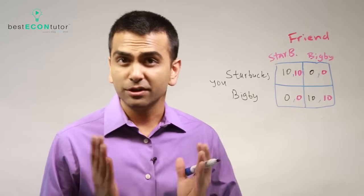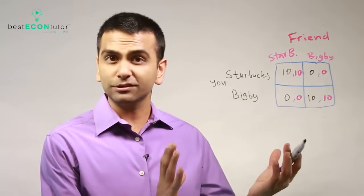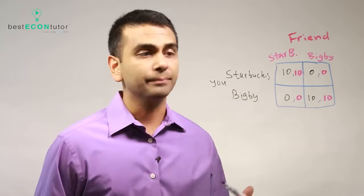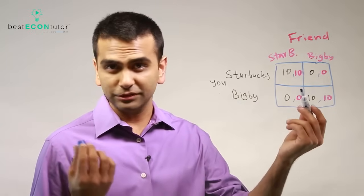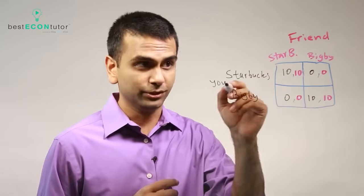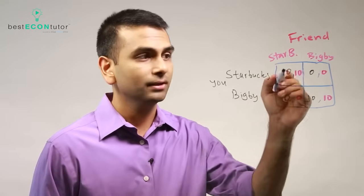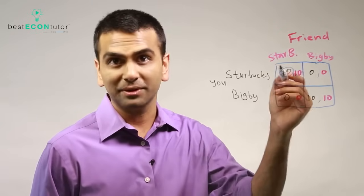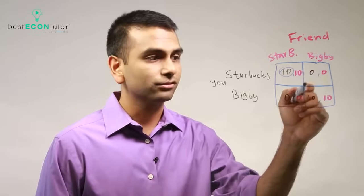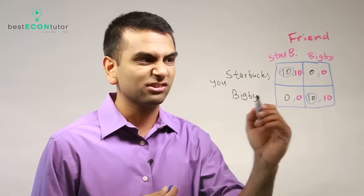Now let's look at another example. Suppose you and your friend are deciding whether to go to Starbucks or Big B, and let's say you both like them equally - let's find the Nash equilibrium. We apply the procedure one column at a time, playing as you. If your friend is choosing Starbucks, what do you want to do? Starbucks gets you ten and Big B gets you zero, so you'd want to do Starbucks - because you don't want to drink coffee alone. If they're doing Big B, again you're choosing between zero and ten, so you'd want to do Big B. So you have no dominant strategy.